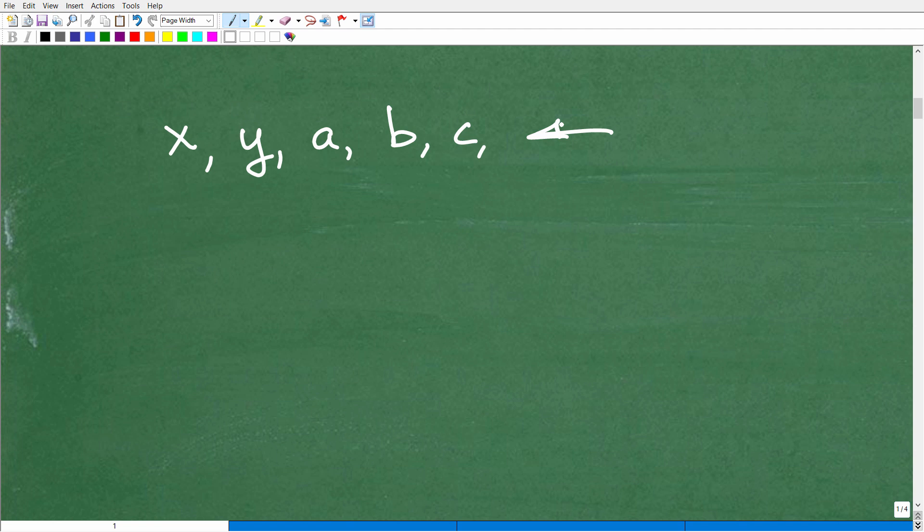So oftentimes, when you have a problem, you'll be able to kind of identify a variable, or oftentimes, you'll be given a problem like 2w plus 3w is equal to 6 minus w. So you'll be given equations with a variable, but if you have to select a variable for a particular problem, it's 99% of the time is going to be a letter, and even more so, it's going to be a lowercase letter.